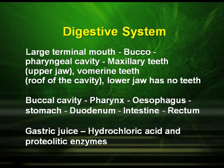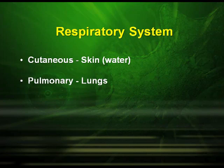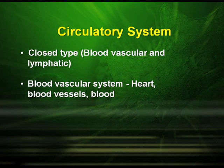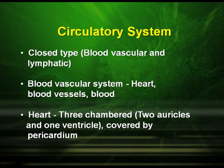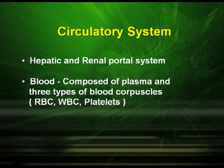The gastric juices released are the hydrochloric acid and the proteolytic enzymes. Frogs generally carry out three types of respiration: through the skin, which is called cutaneous respiration; through the lungs, which is pulmonary respiration; and through the buccal cavity, which is called buccal pharyngeal respiration. They have a closed type of circulatory system which includes the blood vascular system and the lymphatic system. The blood vascular system includes the heart and blood vessels. The heart is three-chambered, having two auricles and one ventricle, which is covered by pericardium. It has the hepatic and renal portal system.